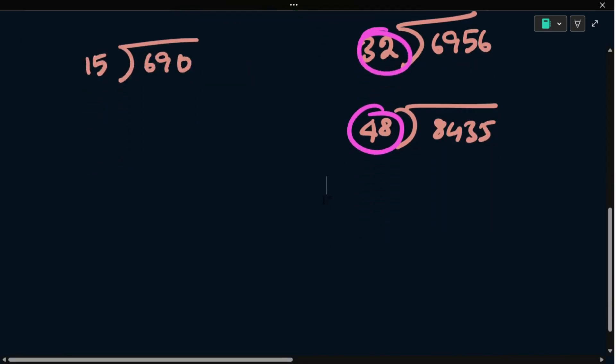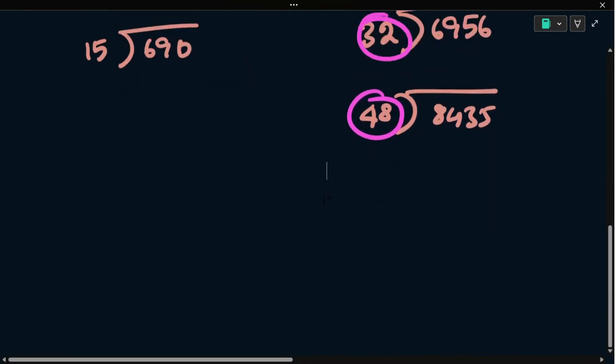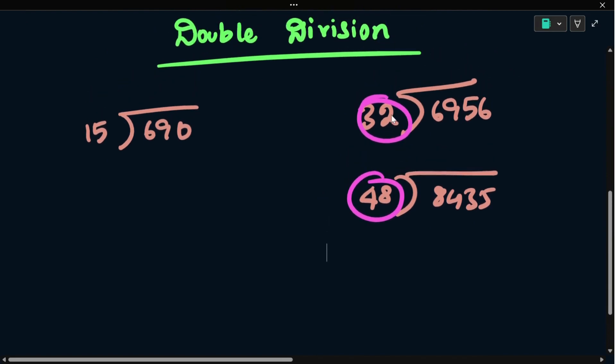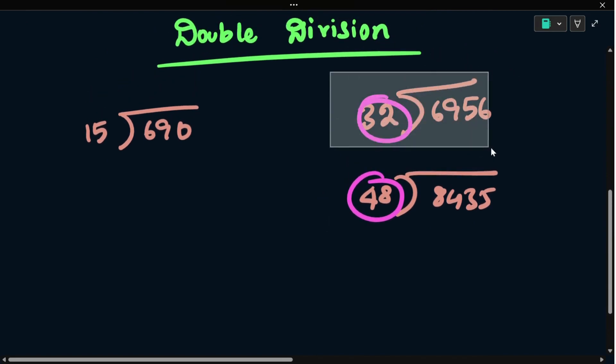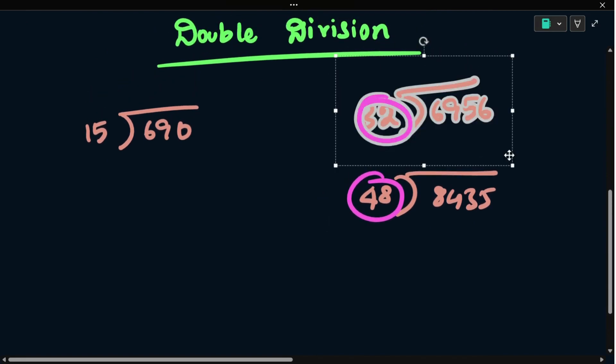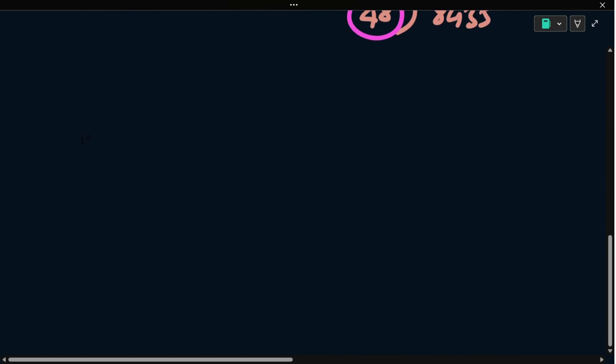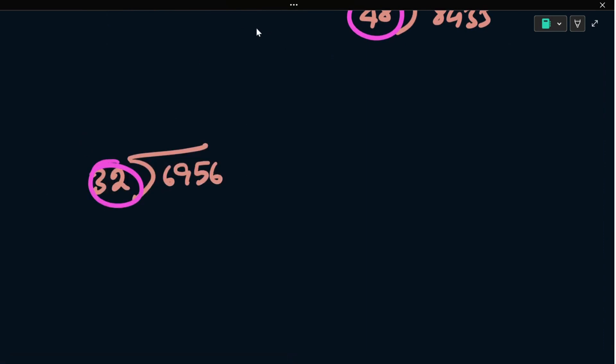Use the smart double division method. This is an example: 6956 divided by 32. Use the smart double division method.